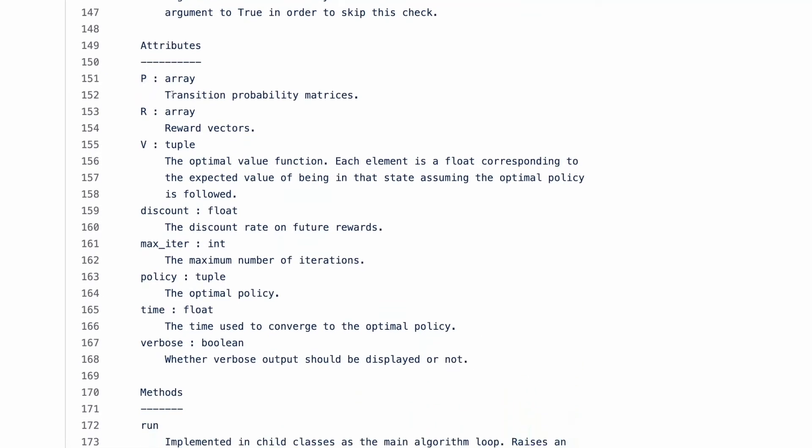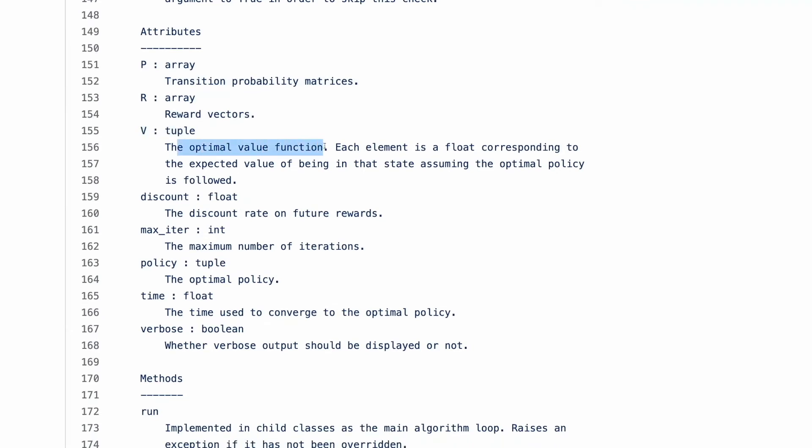Attributes. We have array of transition probabilities. Reward is also array of values, how we price the agent for actions and state pairs. V, optimal values function. We will talk about value functions soon. This thing represents state values for each state.